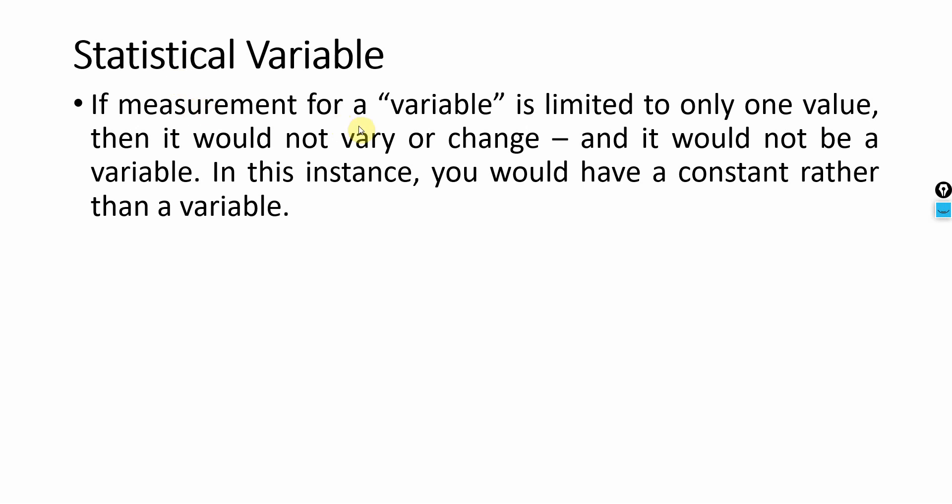If a measurement for a variable is limited to one value—if a variable can only have one value and it does not change for a particular respondent or event—then it is a constant, not a variable. The value will change from person to person, from time to time, from place to place, and that is what makes a statistical variable variable, because it changes.